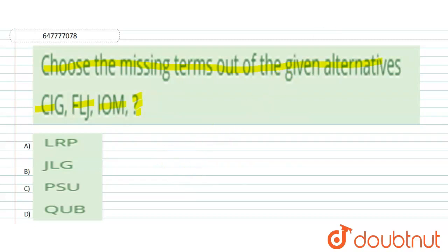So first of all logic check करेंगे। यहाँ पर जो given है that is C-I-G, then F-L-J, and then I-O-M. तो यहाँ पर सबकी हम place value लिखेंगे। C जो है आपका third place पर आता alphabetical series में, I आपका 9 पर आता है, G आपका 7 पर आता है। F आपका 6 पर आता है, L 12 पर, and J आपका 10 पर। I 9 पर, O 15 पर, M 13 पर।